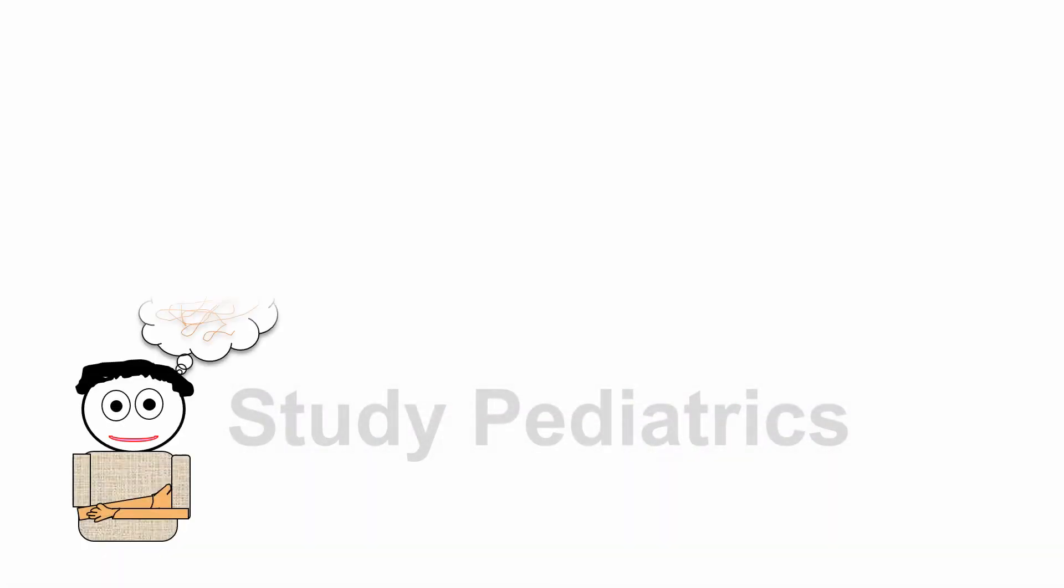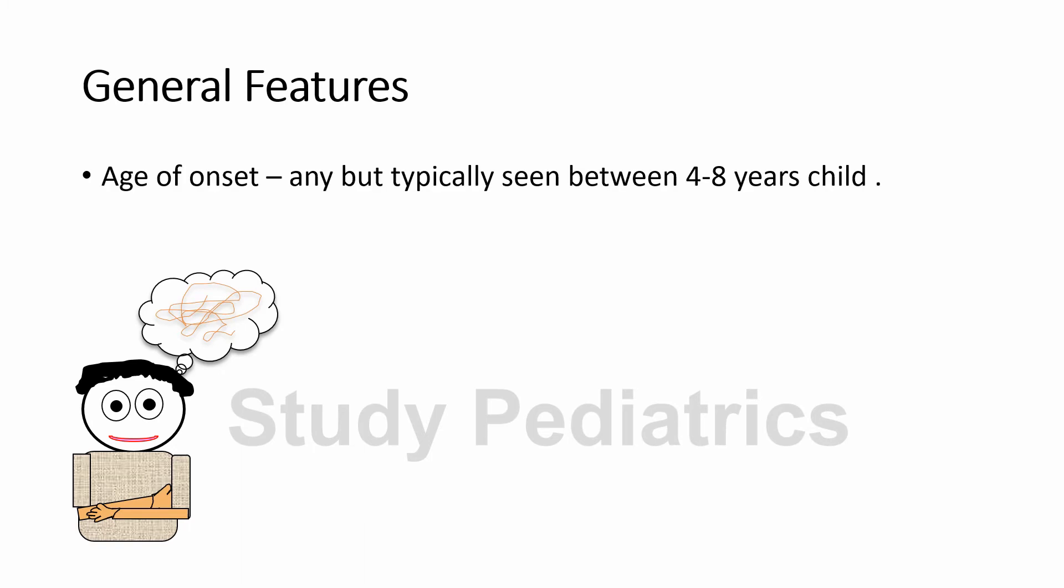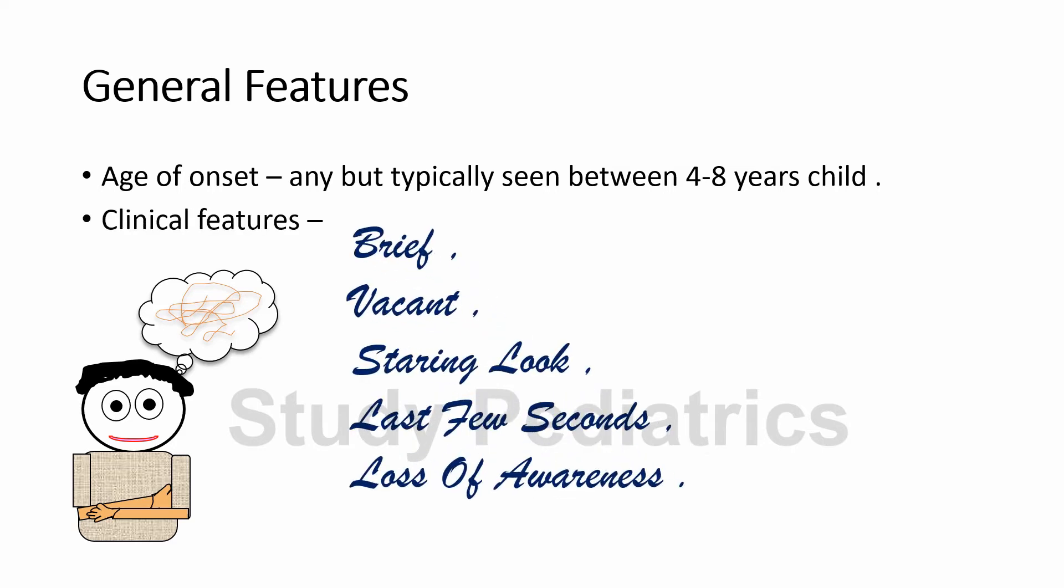General Features of Absence Seizures: It may start at any age, but usually involves children of age 4 to 8. Parents often complain of their child having brief, vacant and staring looks with scholastic performance going down. But the interesting thing to note here is that even though there is loss of consciousness, muscle tone is still maintained.